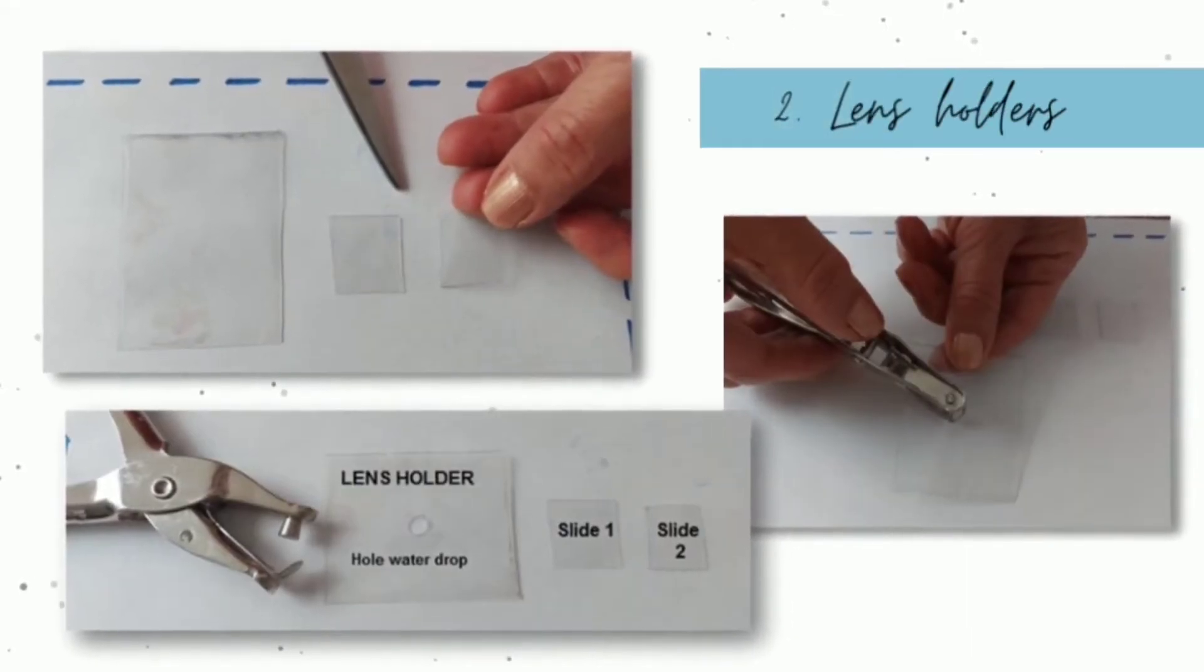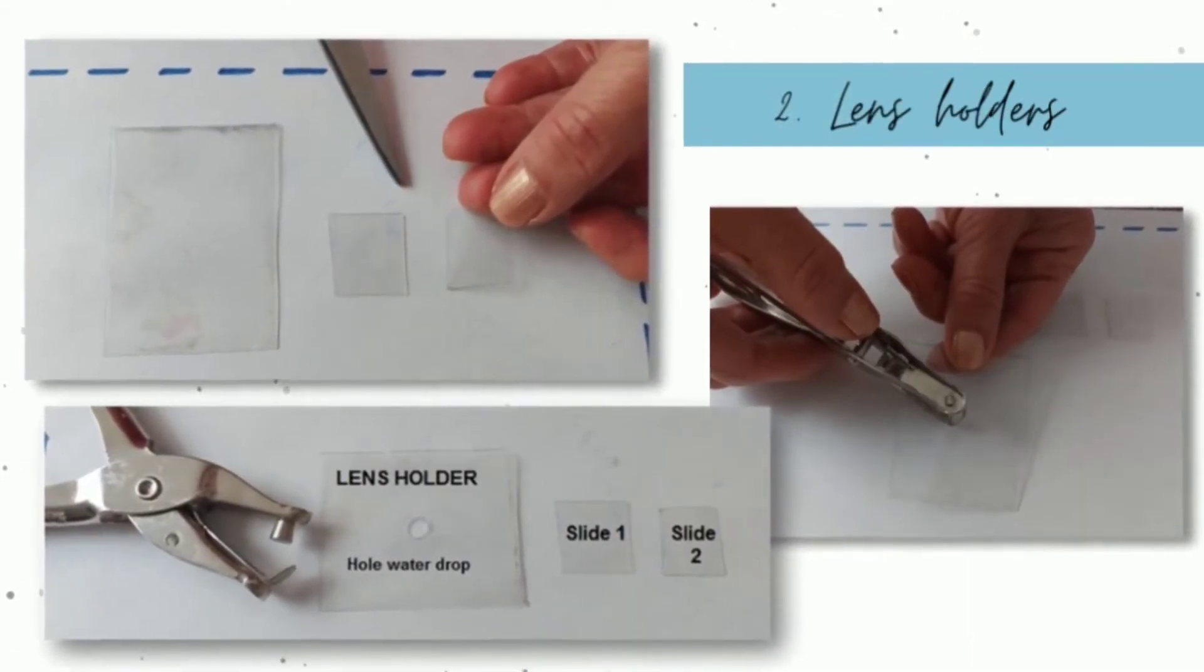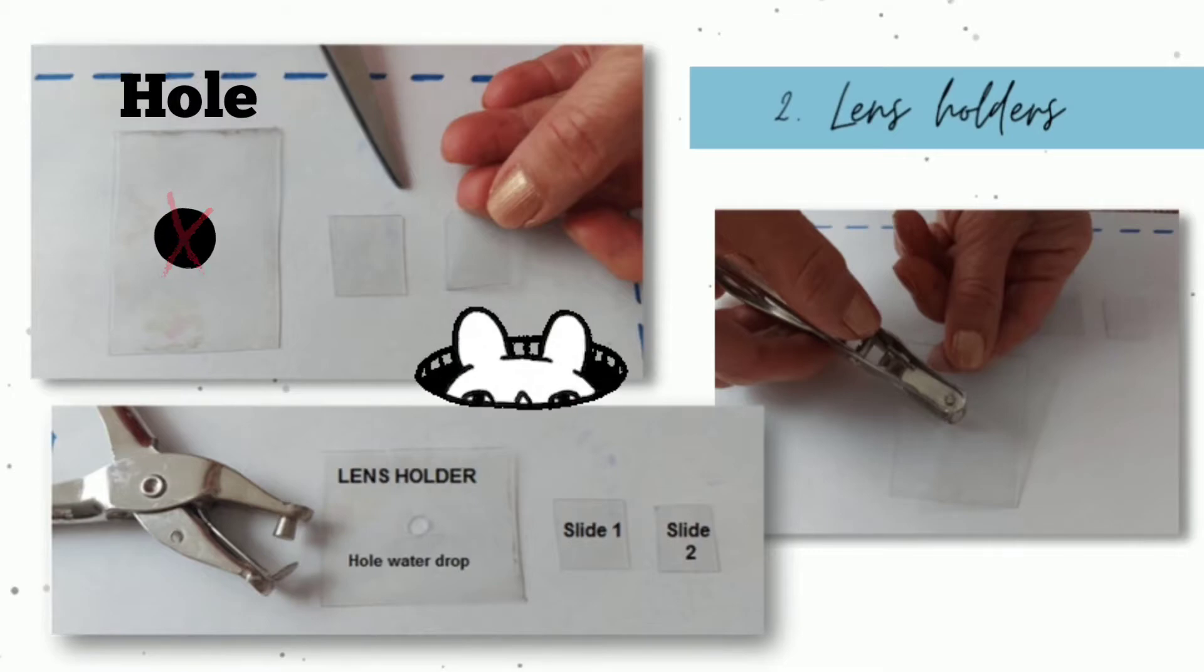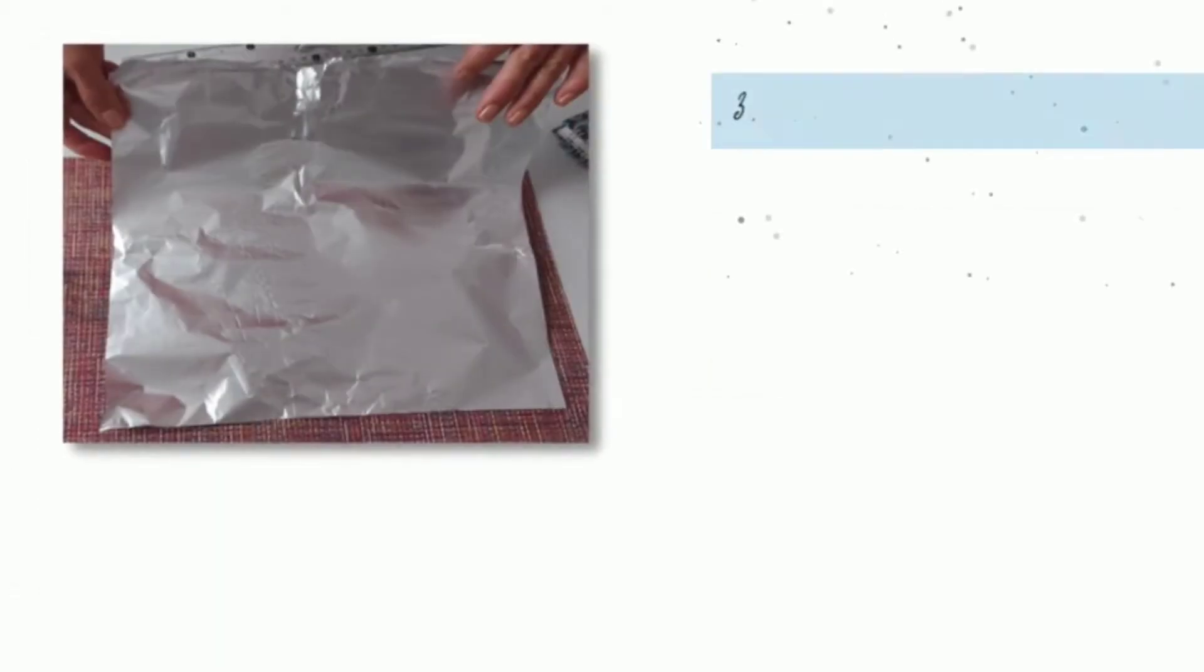Now, we have to cut out the lens holder with the paper hole punch right in the middle of the plastic to do a beautiful hole in the center.